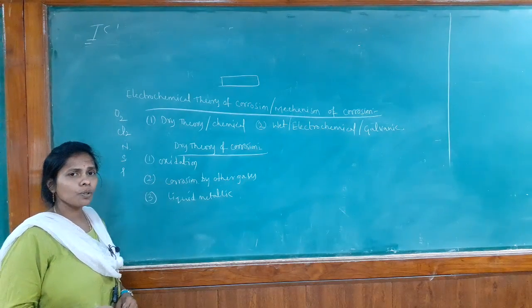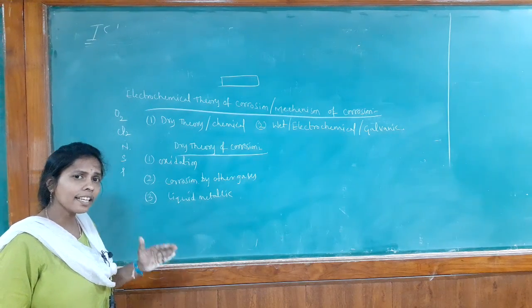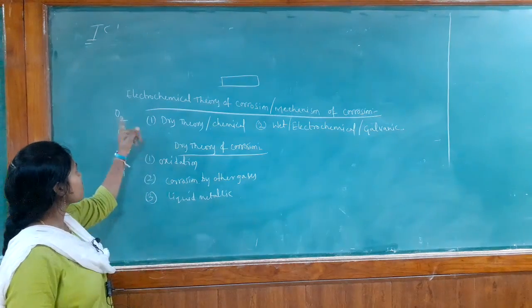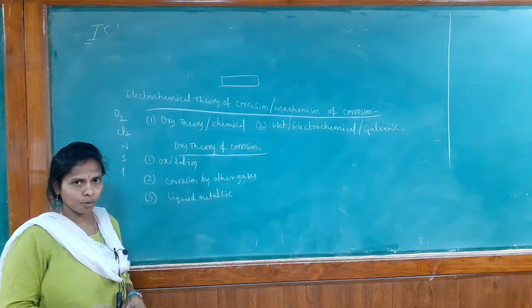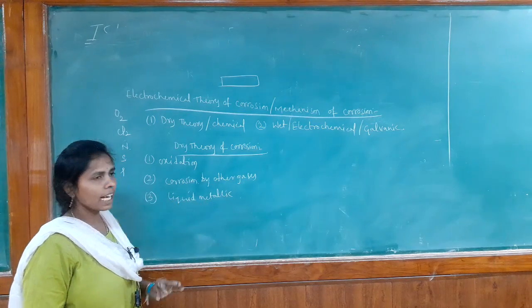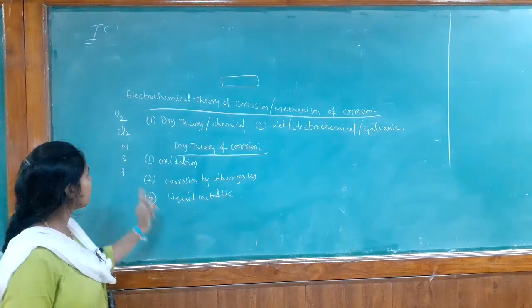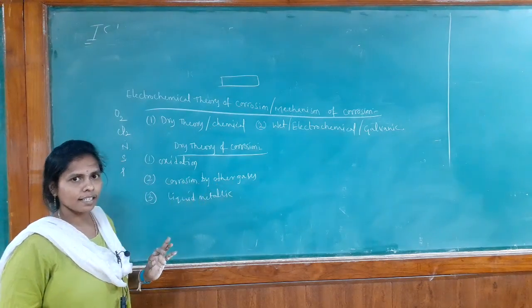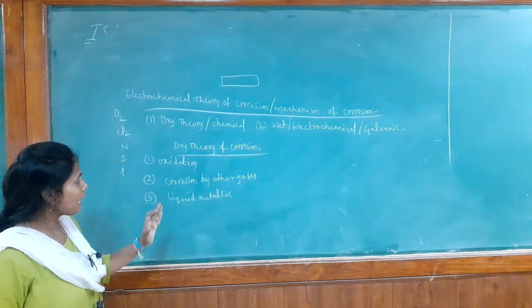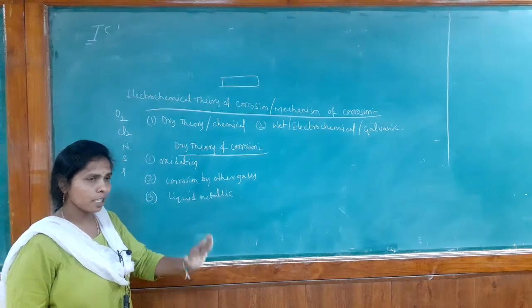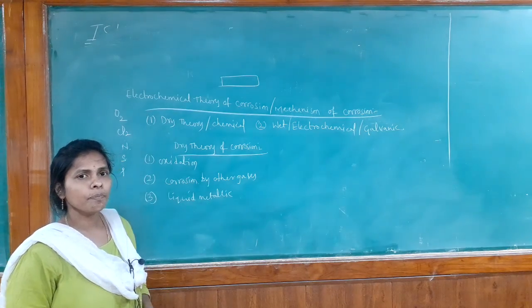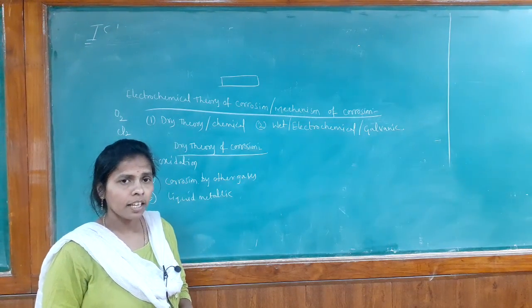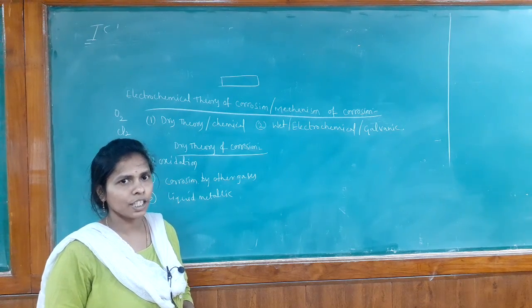The first type is oxidation corrosion. When the metal undergoes corrosion in the presence of oxygen, that is called oxidation corrosion. Corrosion by other gases is when the metal reacts with remaining gases except oxygen. And the last one is liquid metallic corrosion, which I will explain later. Let us see them one by one.